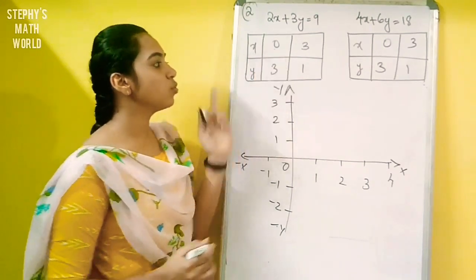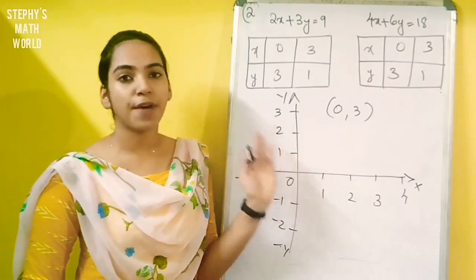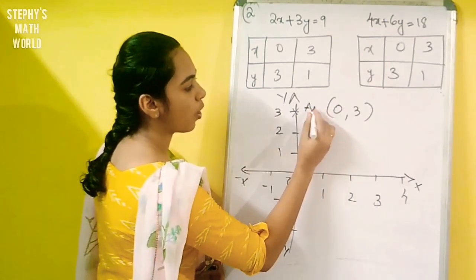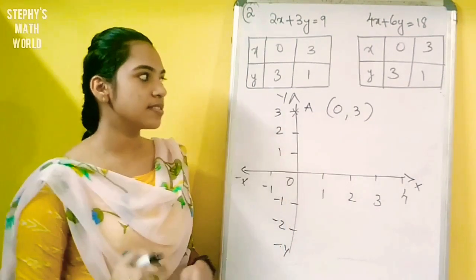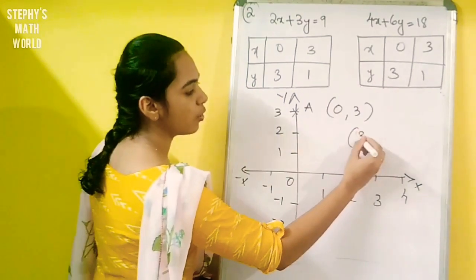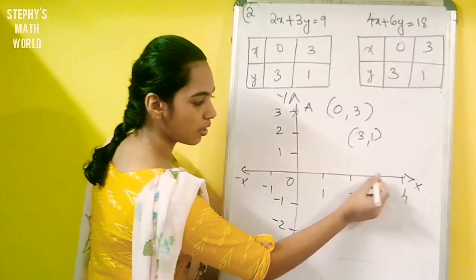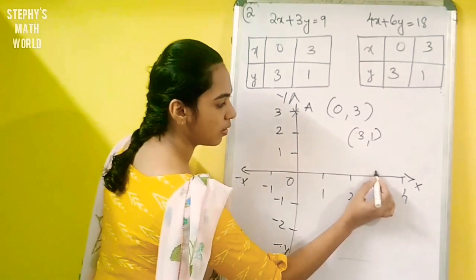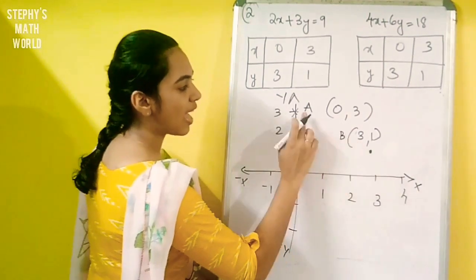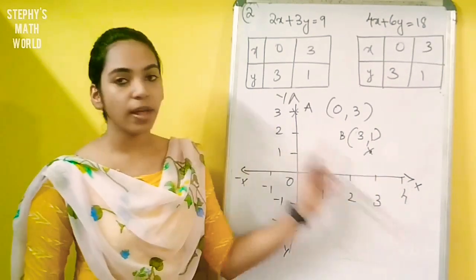Now x is equal to 0 and y is equal to 3, giving the point (0, 3). When x is equal to 3 and y is equal to 1, we get the point (3, 1). You can join these two points to form the line.